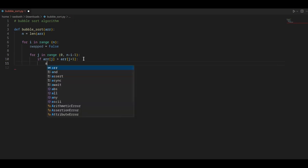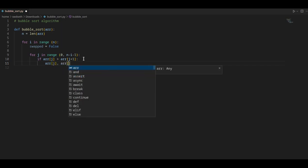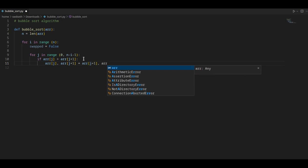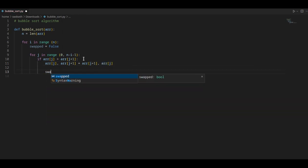So here we'll swap, so array j and j plus 1 element will be swapped, so it will be array j plus 1 and array j. And as we have swapped, so the variable will be updated to true, so true will be capital, yes here.